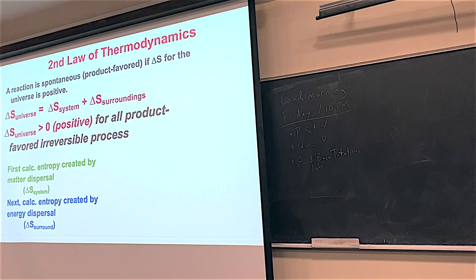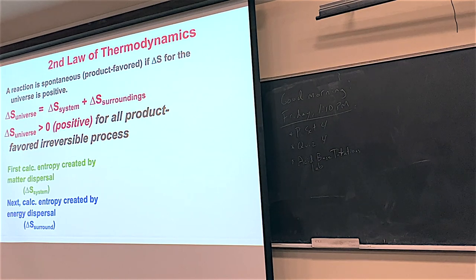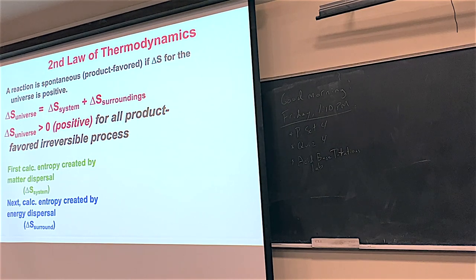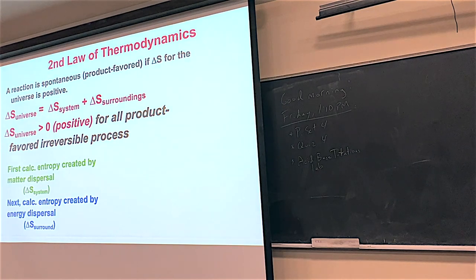The second law is really where science kicks in. It basically says that anytime you're going to have a spontaneous reaction — spontaneous in thermochemistry means it's going to happen naturally, it's product favored, equilibrium constants greater than one — anytime you have a spontaneous reaction, the delta S for the universe is positive. The delta S of the universe incorporates the delta S of the system plus the delta S of the surroundings, i.e., everything around the system.